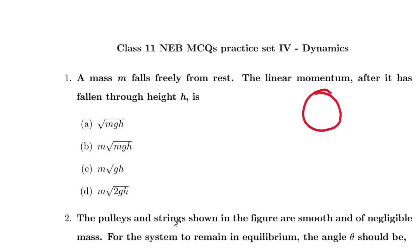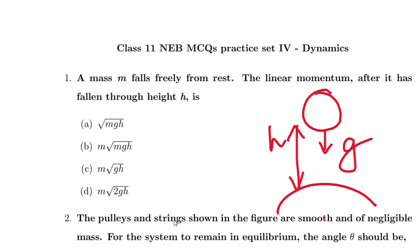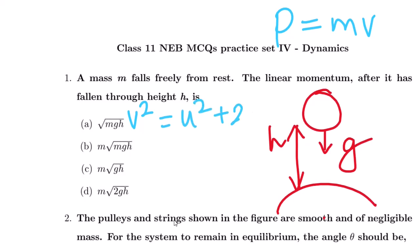The mass falls freely from rest. We have a formula for momentum: P is equal to mv, where m means mass and v means velocity. That means we need the body's velocity. We have the equation of motion: v² equals u² plus 2gh. Since acceleration is due to gravity, the only force attracting the body towards the earth is gravity.